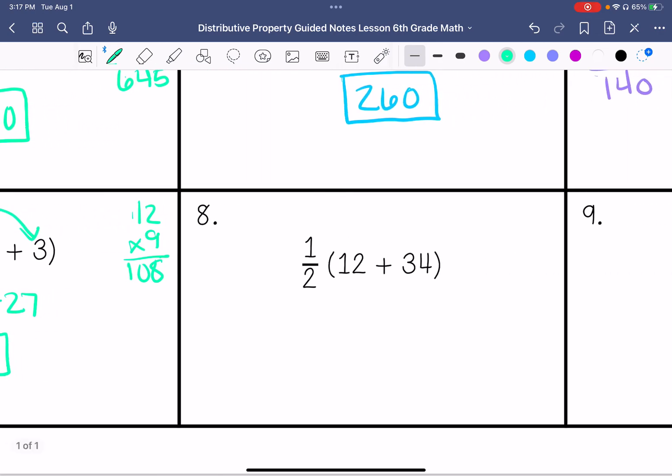Number 8, 1 half times 12. So that would be 12 over 2, which simplifies to 6. 1 half times 34 would be 34 over 2, which simplifies to 17. Add those together, and we get 23.